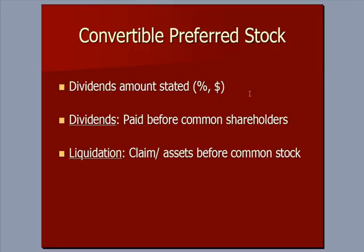Let's define what we mean by convertible preferred stock. Preferred means better — just like preferred seating in a restaurant is better than regular seating. Preferred stock is special for three reasons: the dividend amount is stated on the face of the certificate as a dollar amount per share or a percentage of par; preferred dividends are paid before common shareholders get their dividends; and if the company liquidates, preferred shareholders have a claim on assets before common shareholders.